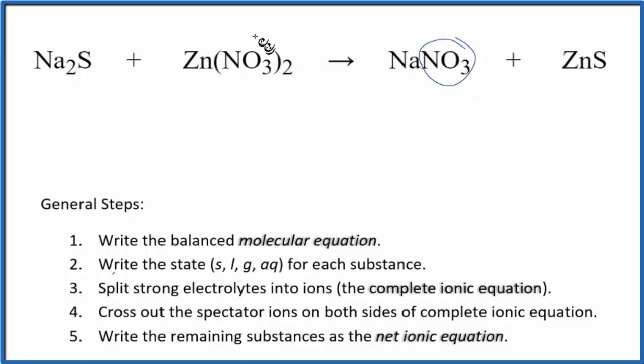So you have one nitrate here and two nitrates here. So I'm going to put a two in front of the sodium nitrate. Now I have two sodiums. Those are balanced. Everything else is balanced. So that's the balanced molecular equation.